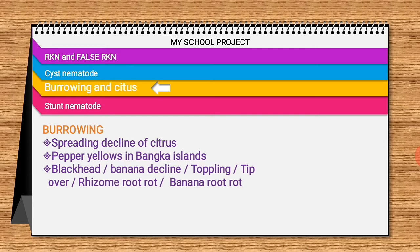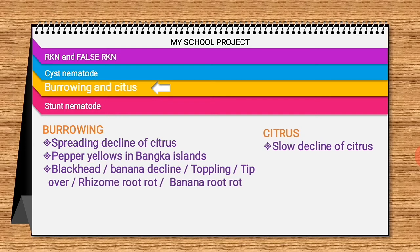The third disease is blackhead banana decline — also called toppling or tip over, Musa root rot, or banana root rot — in which the nematode weakens the anchor roots. The anchor (A-N-C-H-O-R) roots are weakened and the plants can fall from the soil. It also causes slow decline of citrus, where gradual starvation and consequent deterioration of the tree occurs.